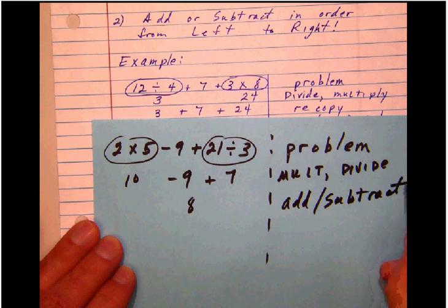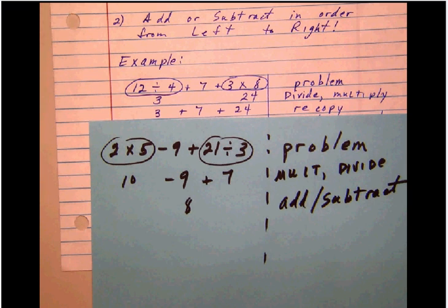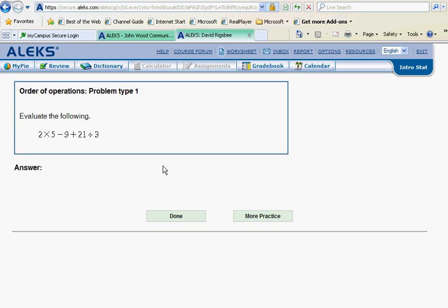So let's go ahead then and go back to ALEKS, give that the answer 8, and see if we're good to go. Let's check that, and we see that we are fine. So this is order of operations, problem type 1.